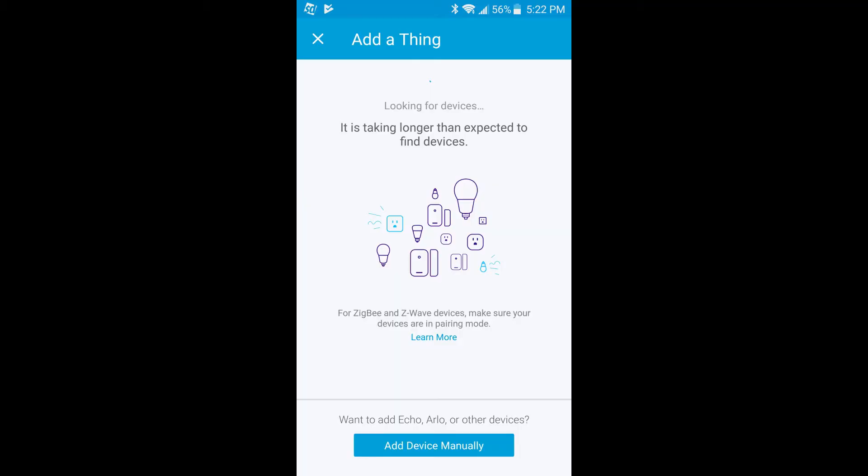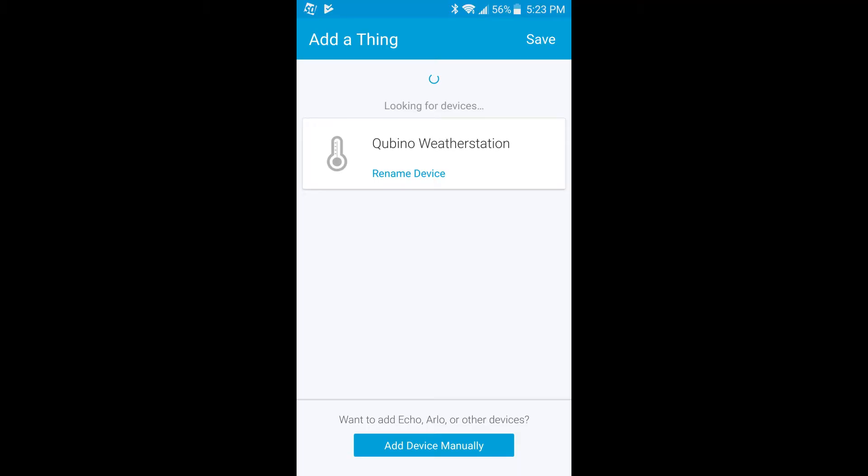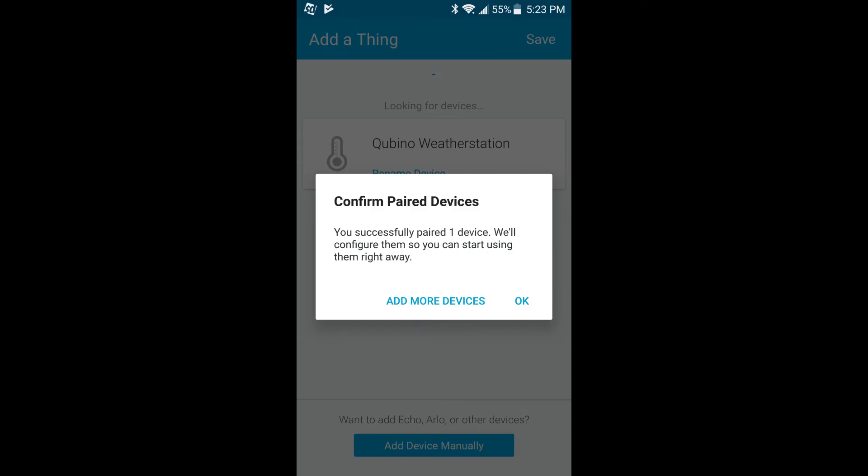Now open up the SmartThings app on your smartphone and add a thing. Once it's looking for devices, plug in your USB key to power. The Auto Inclusion works for about 5 seconds after connected to the power supply. It doesn't have to be on the SmartThings Hub, but since we had an open port, we decided to use that one. Your Weather Station should appear within a minute or two. Click OK to confirm the pairing.